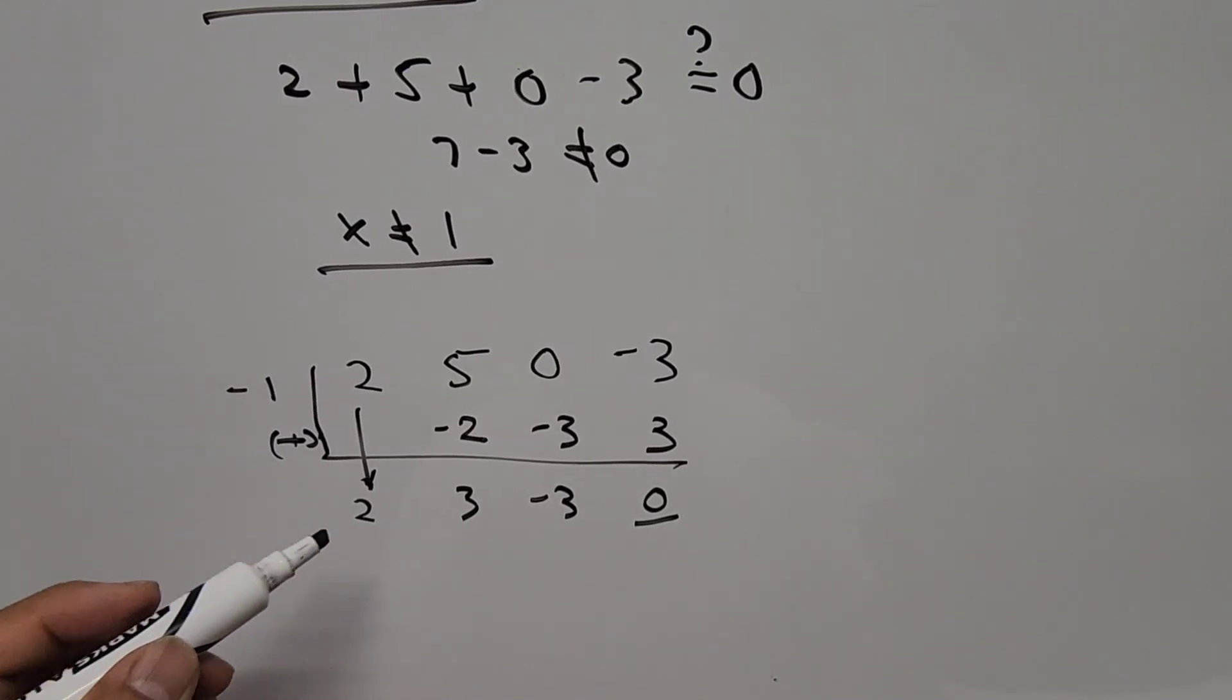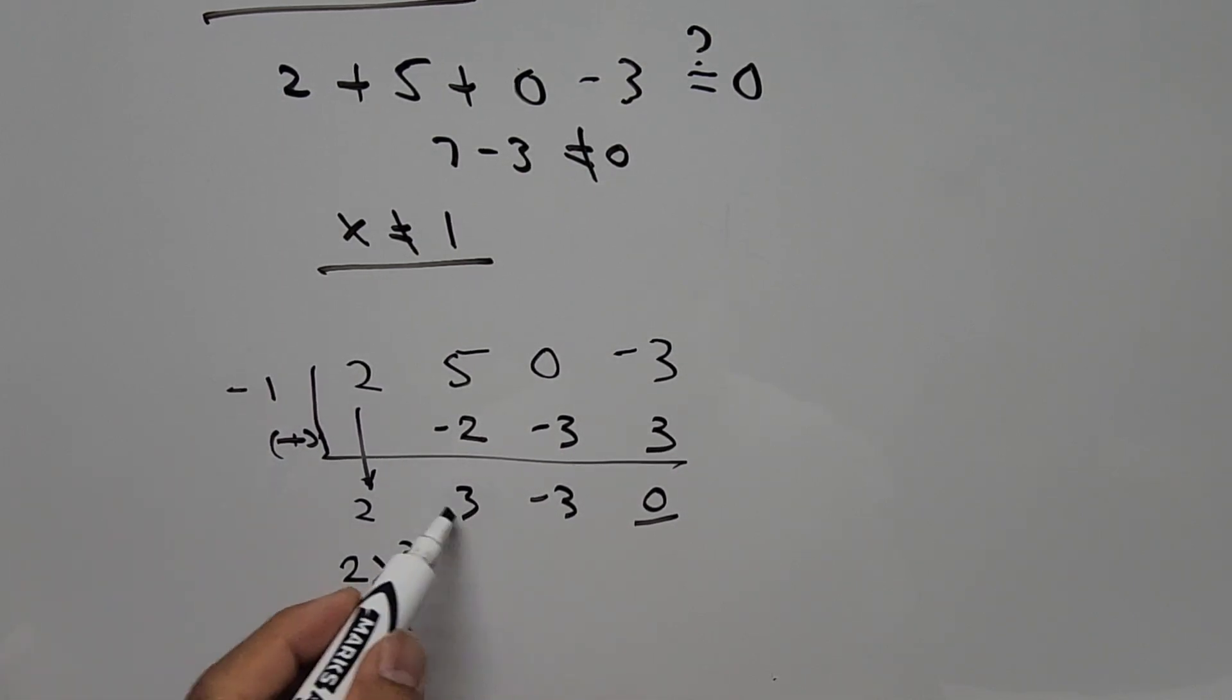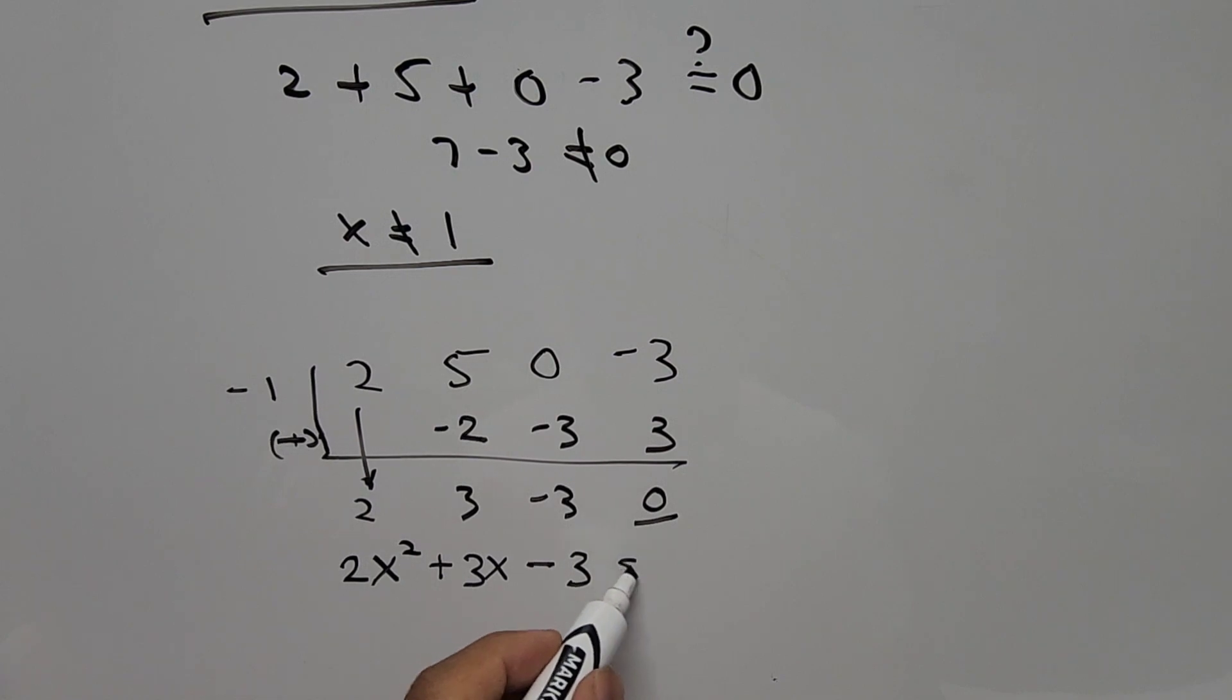And so these are the coefficients. 2 is the coefficient of x². So 2x². Then this positive 3, that means + 3x. And then -3 equals 0.